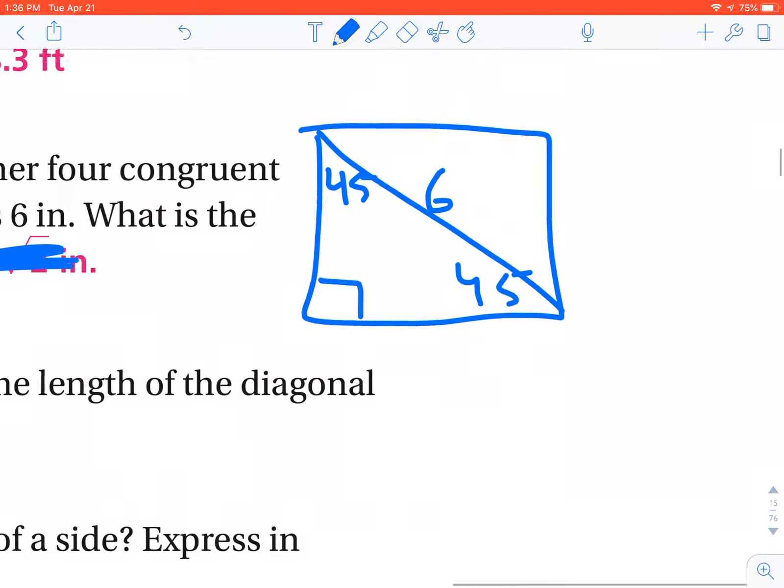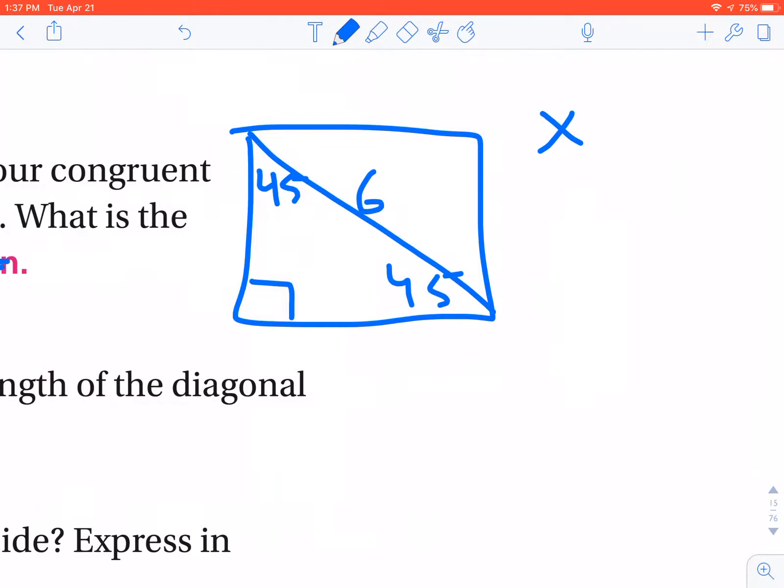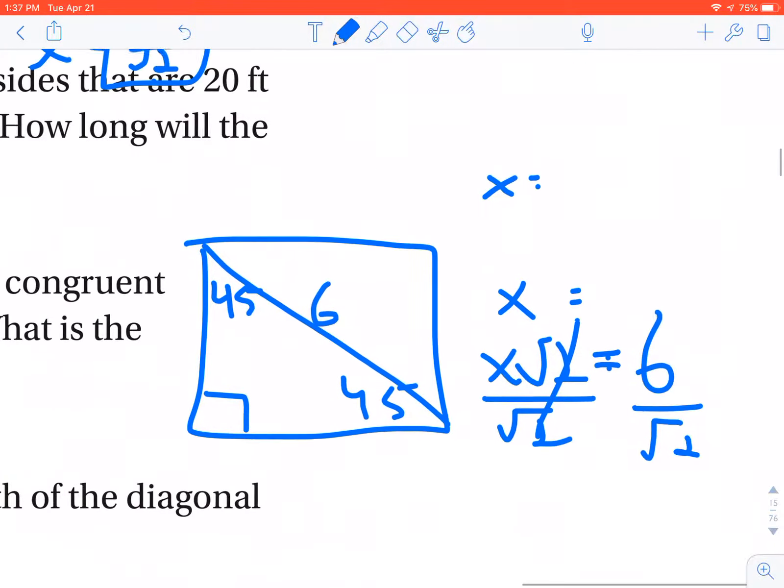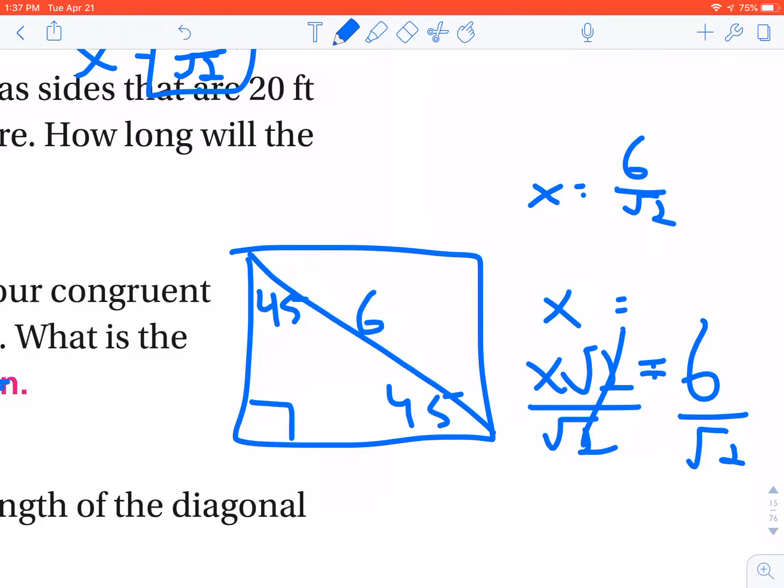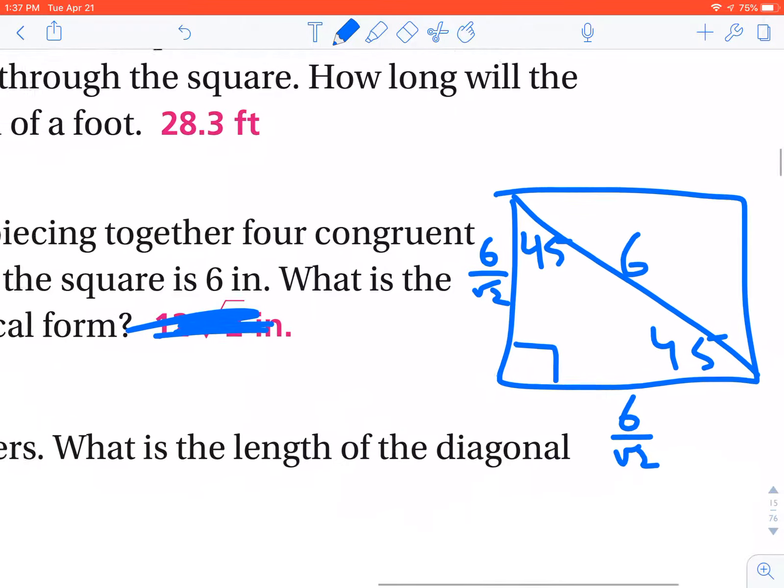Okay, so this is my hypotenuse. So go to your little table, x, x, x radical 2. And because I have given you the hypotenuse, the hypotenuse is 6. So x radical 2 is equal to 6. So if I solve this for x, I divide both sides by radical 2. And my value for each one of my legs is going to be 6 over radical 2. So each one of these legs is 6 over radical 2.